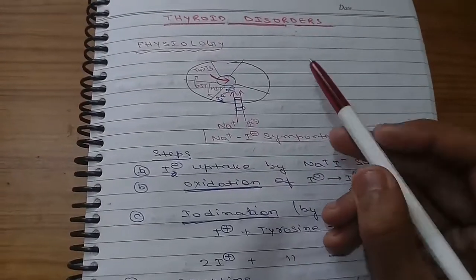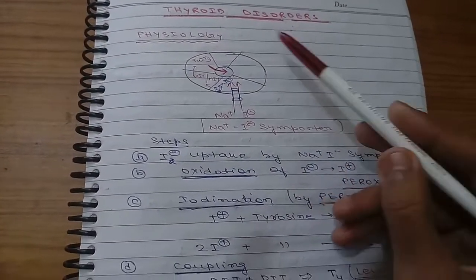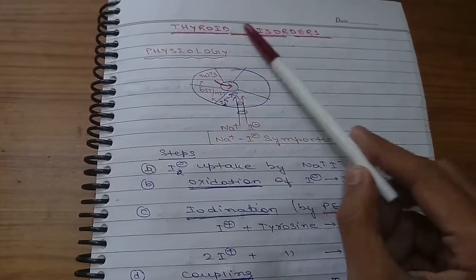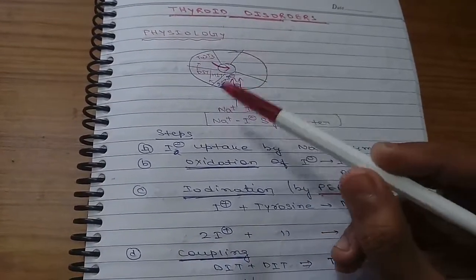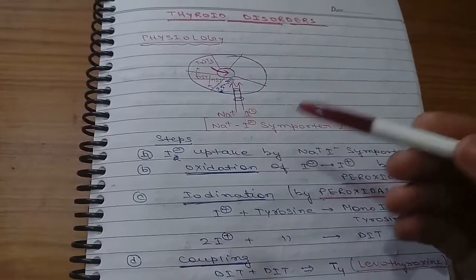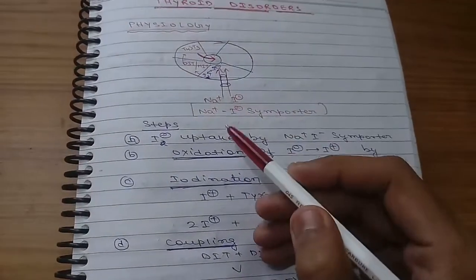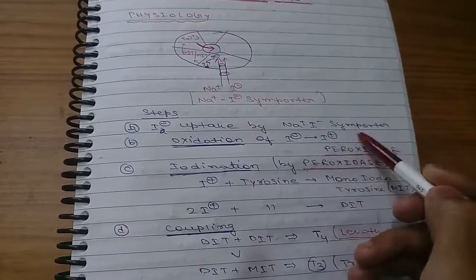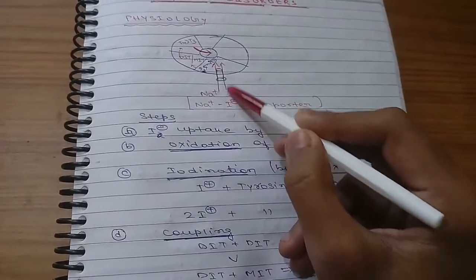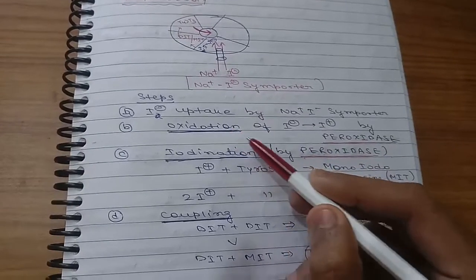Hello friends, in the previous video we discussed bone disorder. Now in this video we will discuss the pharmacology involving thyroid disorders. First, we'll look at the general physiology of how thyroid hormone is formed. First, iodine (I-) is taken up by sodium iodide symporter into the cells. Then oxidation of I- into I+ is done by peroxidase enzyme.